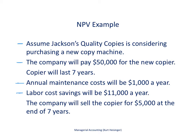Here is an example to illustrate the NPV method. Assume we are Jackson's Quality Copies, a company that makes copies for other people and companies, and we are considering the purchase of a new copy machine. We would pay $50,000 today for the copier, expect it to last seven years, with annual maintenance costs of $1,000 per year, labor cost savings of $11,000 per year, and an expected sale of the copier at the end of seven years for $5,000.